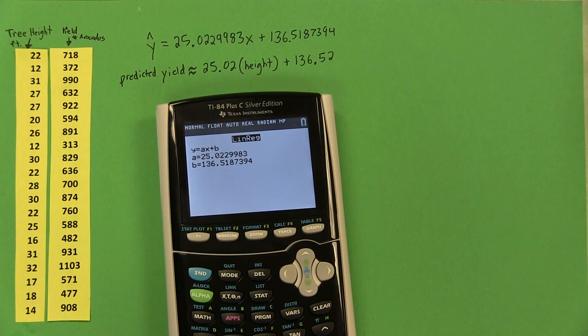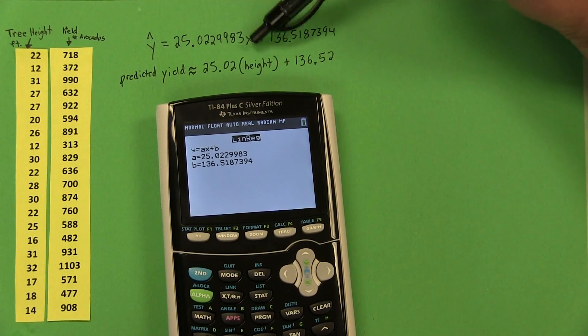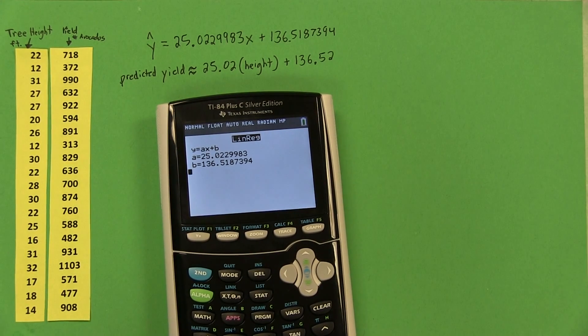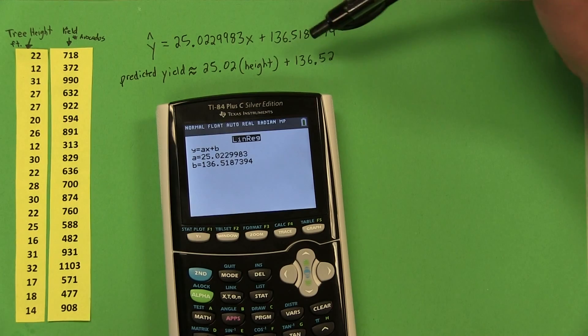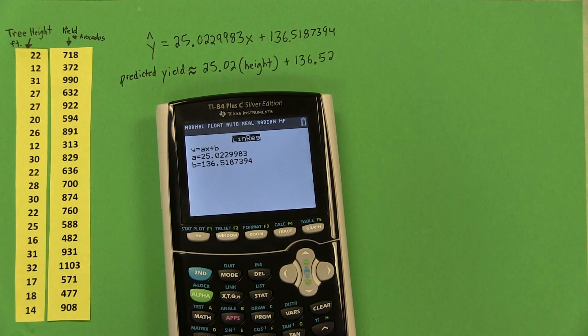I've written the equation in two different ways. One is using the variables y and x. So our predicted y is that. In the second equation, I used the context of the problem, and I also rounded the slope and y-intercept a little bit. Our predicted yield is 25.02 times the height plus 136.52.